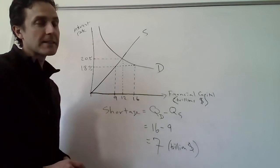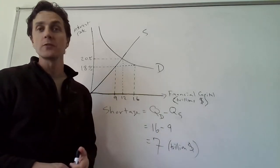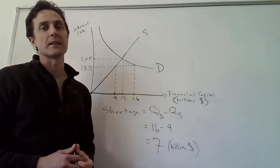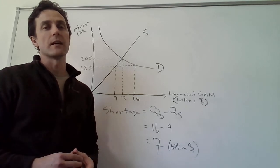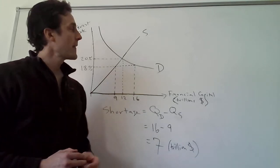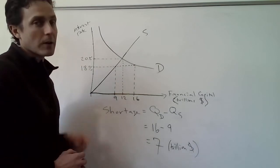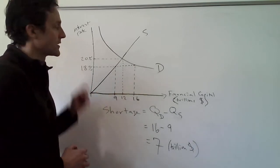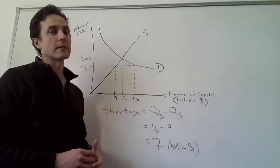With an 18% usury law saying that there is an 18% maximum ceiling on interest rates, that means this market is not going to be able to get up to the interest rate where it will tend towards equilibrium.